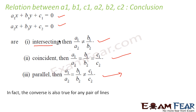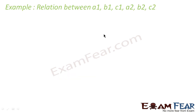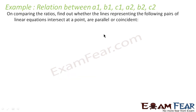If you know it is intersecting, you can tell that a1/a2 is not equal to b1/b2. If you know that a1/a2 is not equal to b1/b2, you can tell that it is intersecting. So both ways it is correct. Now we will take some examples — just by comparing the ratios we have to find whether the lines are intersecting, parallel, or coincident.